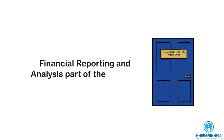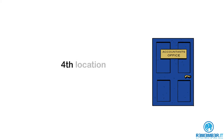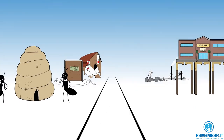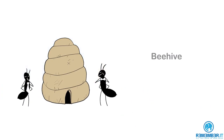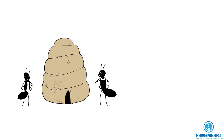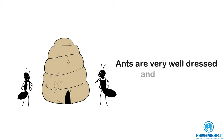The fourth location is a large door, which leads to the CFAVIL accountant's office. Accountants generate financial reports, so this is where the financial reporting and analysis part of the syllabus is covered. You know it's the fourth location because door rhymes with four.